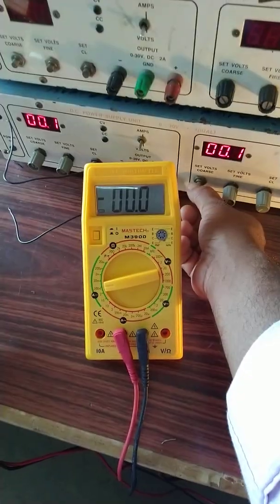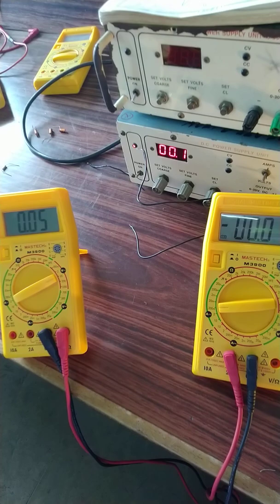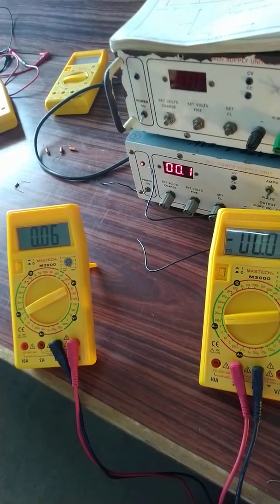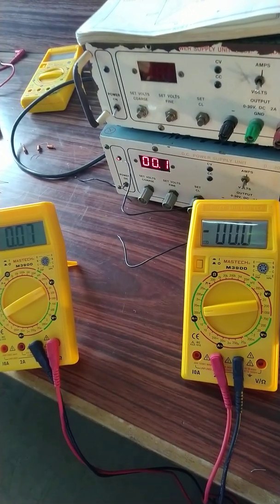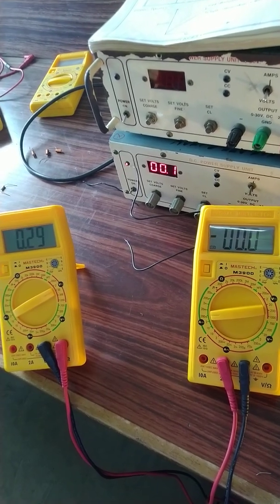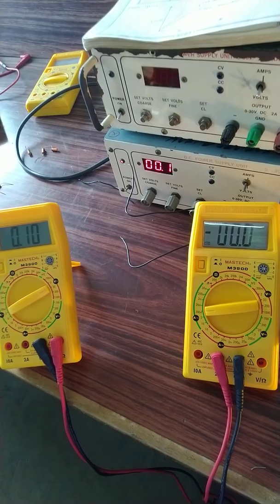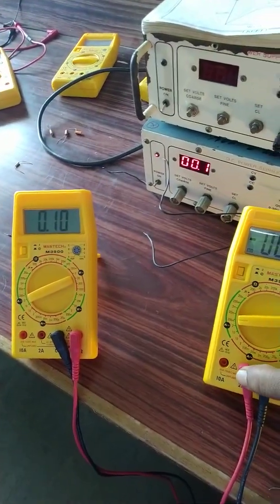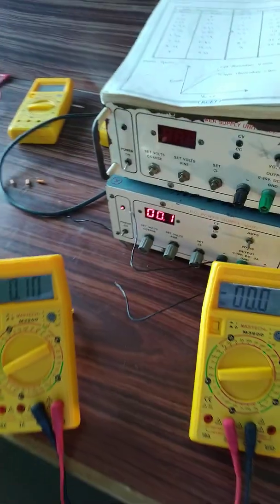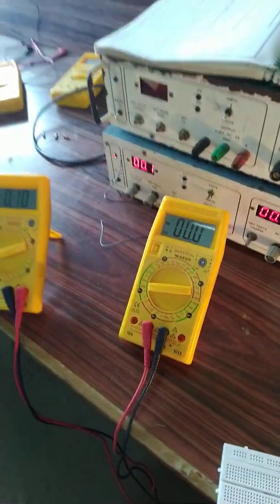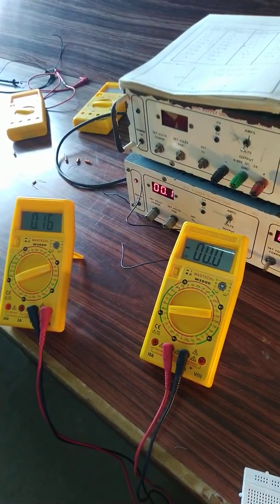Now the current is 0.04. The voltage is 0.05. The value is 0.4. Now let's see the power. So this is the power here.